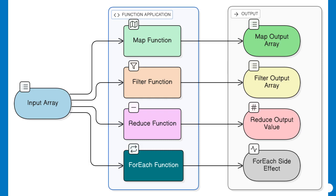Map epitomizes declarative programming — expressing what you want to achieve, not how to iterate through the array. This shift from imperative loops to declarative mapping simplifies reasoning, reduces errors, and leads to more readable code. The power of map lies in its predictability: you always get a new array of the same length, with each element having undergone exactly the operation you specified.